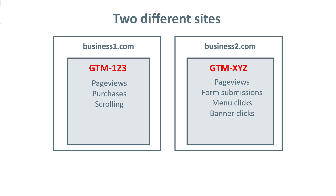Otherwise, if you have a Facebook Pixel tag, you will need to make sure that it fires only on business2.com and not on any other page. That way your trigger conditions will become more complex. But if you had two separate containers, you would just set Facebook Pixel to fire on all pages of business2.com, and you don't need to worry that your tag will accidentally fire on business1.com where it's not supposed to.